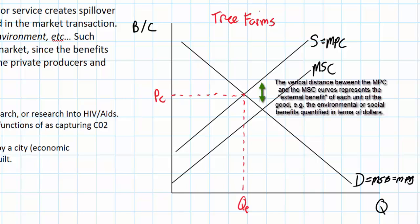The supply and marginal private cost curve represents the cost to the companies that plant the tree farms — you can see that tree farms are relatively costly compared to the cost to society as a whole. At the quantity QE, we want to compare the marginal social costs of tree farms to the marginal social benefits. Going up to the MSC curve above QE and drawing a dotted line across gives us the marginal social cost at that point. Then going up to the MSB curve at equilibrium, I can see that the marginal social benefit of QE tree farms exceeds the marginal social cost.